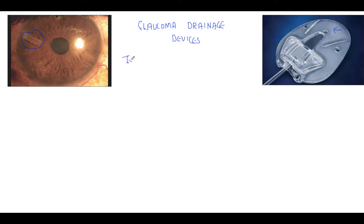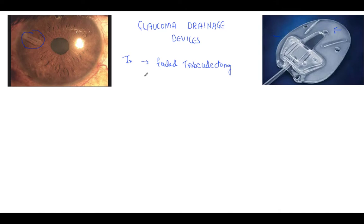The most important indication of glaucoma drainage devices is failed trabeculectomy surgeries. When we do a trabeculectomy, the success rate is normally 50 percent in five years. After five years there is a lot of fibrosis in the space and the amount of filtration that takes place through trabeculectomy decreases. So the first indication is failed trabeculectomy.